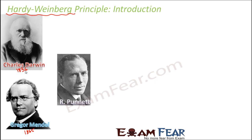Then there came another scientist called Punnett — yes, after whose name the Punnett square has been named. He did a lot of research trying to understand why recessive traits exist over time. Now it was being proved that Mendel's work was correct and whatever laws he gave were correct. But the question that arose was: we know there is something called a dominant trait and something called a recessive trait. The dominant trait always dominates the recessive trait and gets expressed. But why does the recessive trait even exist? Why doesn't it disappear with time? But it still exists.